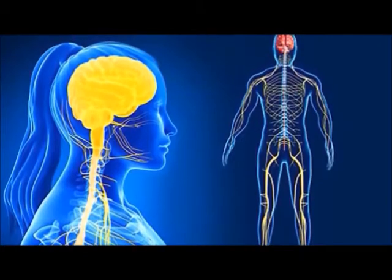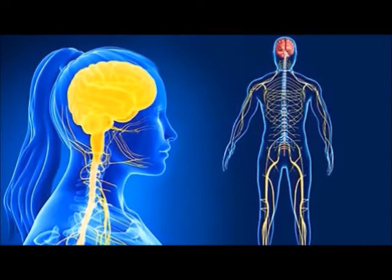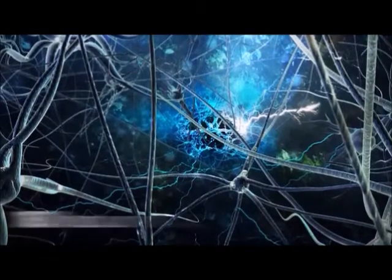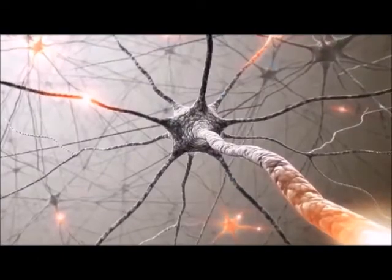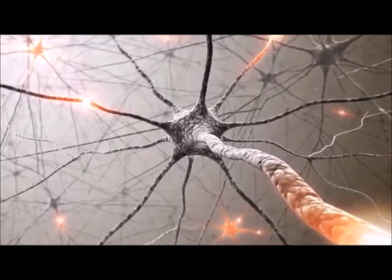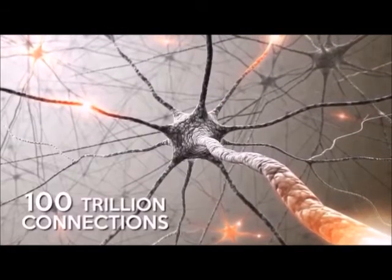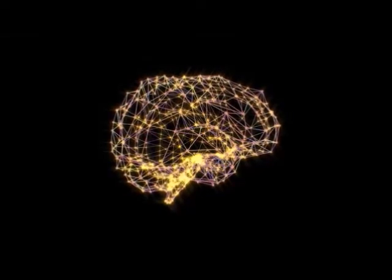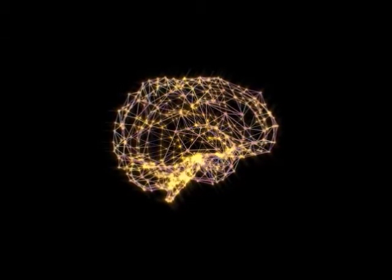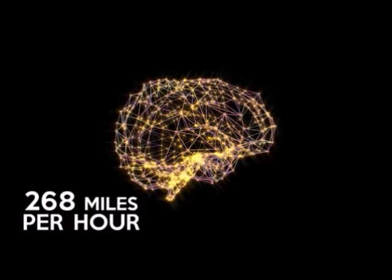The human brain is the central command system for the whole body. It's a mass of about 180 billion neurons. Neurons have multiple synapses that create a network of over 100 trillion connections. Tiny electrical currents and chemical messengers send information around the brain at 268 miles per hour.